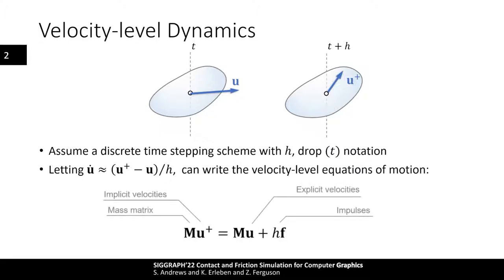This allows us to write the equations of motion using only velocities. The forces are transformed into impulses and we assume a constant mass matrix M which appears on both sides of the equation. This velocity-level formulation is popular for many simulation frameworks. We use a special notation — the plus superscript — to denote a variable whose value is not known until the end of the integration step; in other words, they are implicit. Note that it is trivial to compute the velocities u-plus from this dynamical equation if all values on the right-hand side are known, since the mass matrix is often trivial to invert. However, we will soon see versions of this system that require a linear or nonlinear solver.